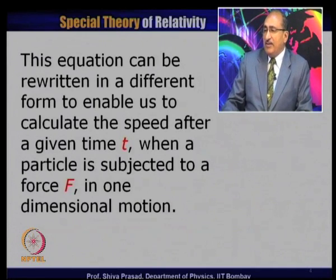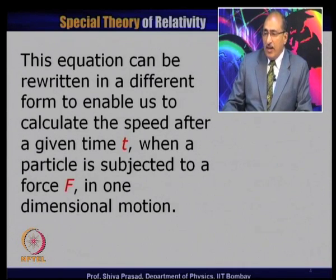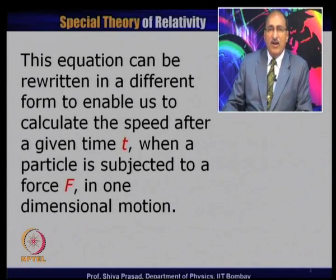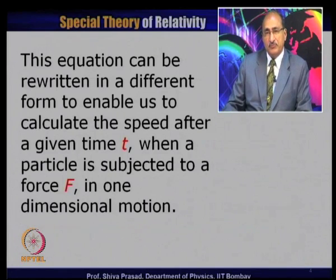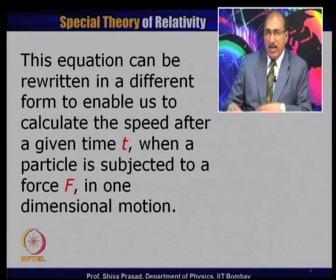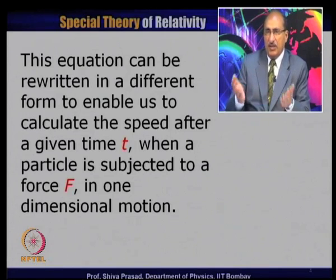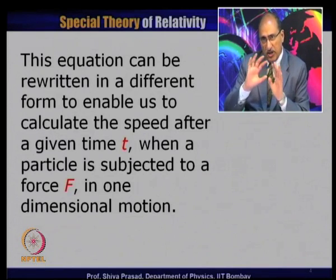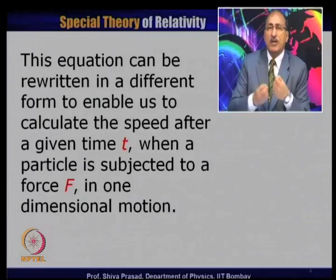This equation can be rewritten in a different form to enable us to calculate the speed after a given time t, when a particle is subjected to a force F in one-dimensional motion. It is essentially a reorganization of terms so that by direct substitution I can find out the velocity at a particular time when a constant force is applied.